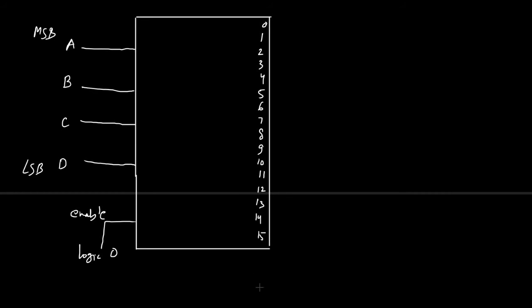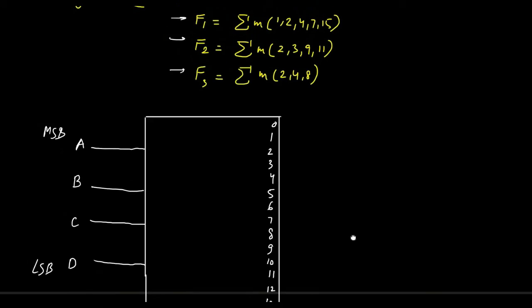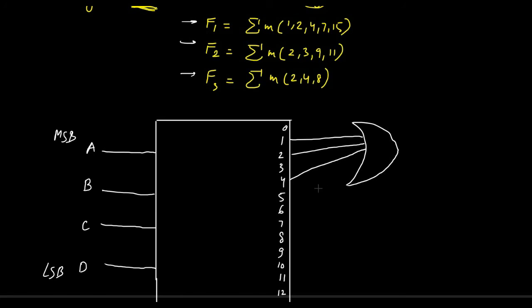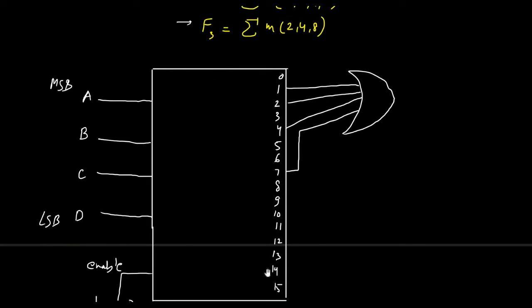For the first function f1, which covers minterms 1, 2, 4, 7 and 15, we use an OR gate with inputs connected to decoder outputs 1, 2, 4, 7 and 15. This gives us function f1.